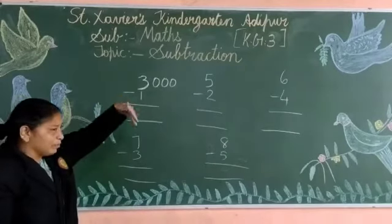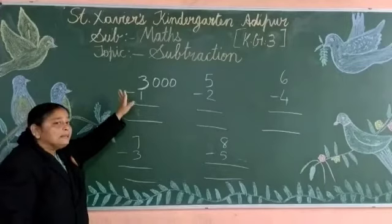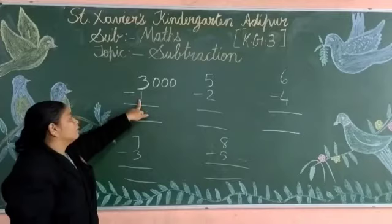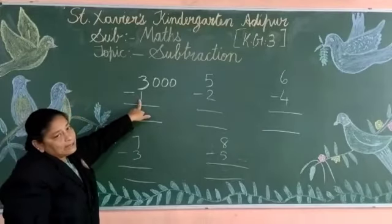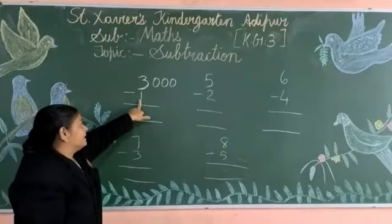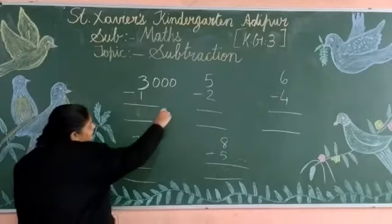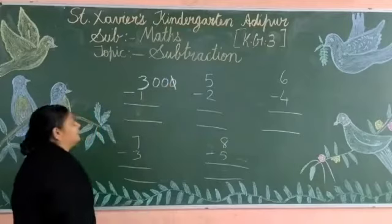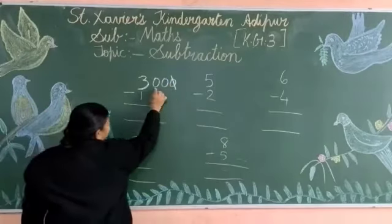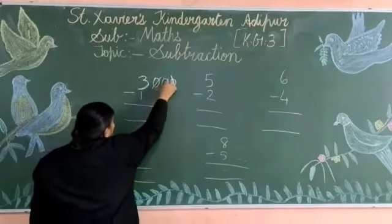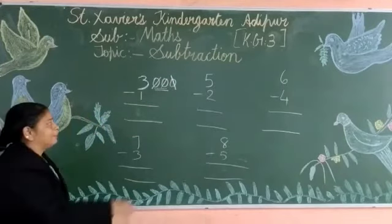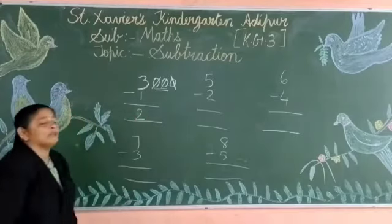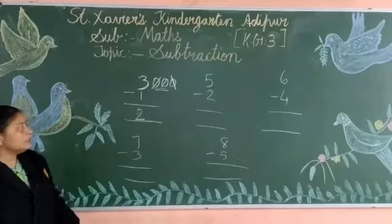Now how many numbers you ought to remove? Yanni aapko kitni numbers yahan se nikaalni hain? Woh kaun si number hai yahan? 1. Toh aapko 1 number nikaalna hai. Toh aapko kya karna hai? Jo yahan pe 3 circles aapne draw ki, us mein se 1 circle ko khat dhenge aur baqi ki circles aapko count karna hai. 1, 2. Toh kitna hai number? Aapki answer jo hai woh hai number 2.